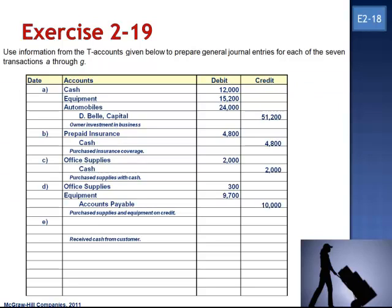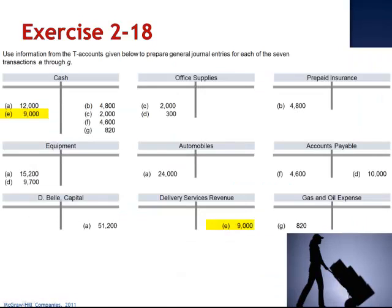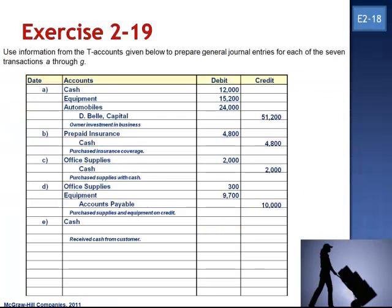In Letter E, we received cash from a customer. In the T-accounts, we see a debit to cash for $9,000 and a credit to delivery services revenue. The journal entry is debit cash and credit delivery services revenue.